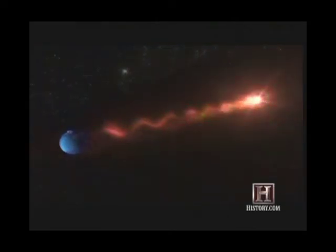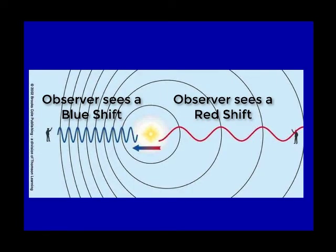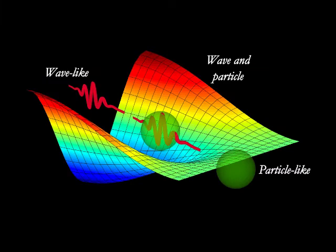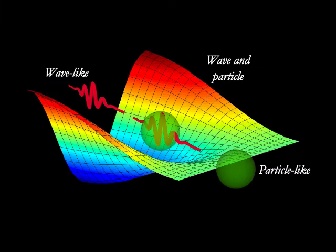Light from an object moving away from you will look slightly redder. When the light waves shift their wavelength toward the blue and toward the red and back toward the blue again as the star wobbles around, the shift is excruciatingly tiny. But it's that difference in the wavelength of the light waves that we measure, and it's what allows us to detect planets around other stars. Doppler can be used to determine the velocity of an object moving toward or away from us. In the next video, we'll discuss the next part of light's dual nature — light as a particle.